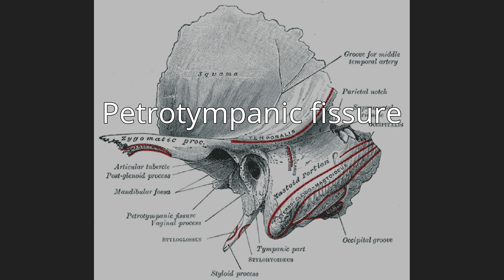The mandibular fossa is bounded in front by the articular tubercle, behind by the tympanic part of the bone, which separates it from the external acoustic meatus. It is divided into two parts by a narrow slit, the petrotympanic fissure.